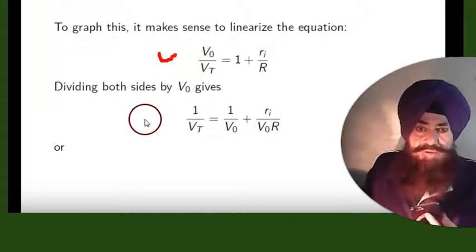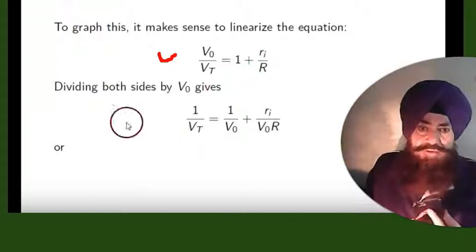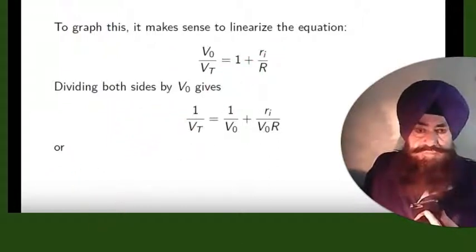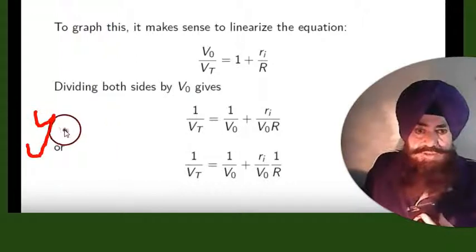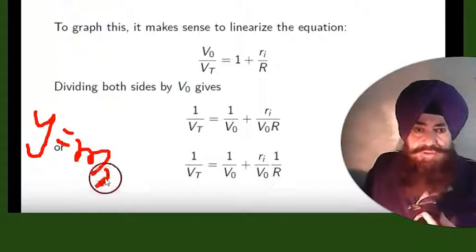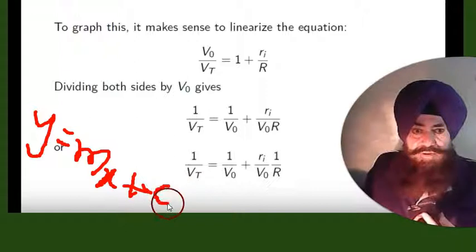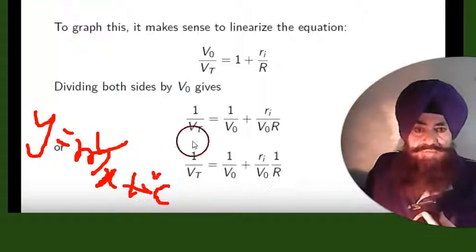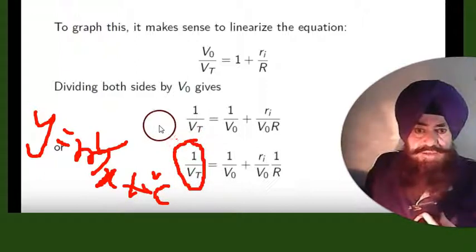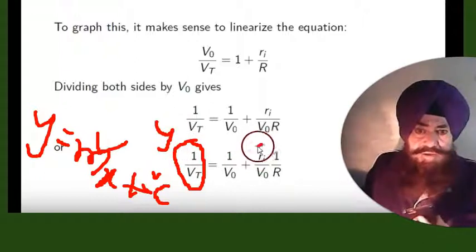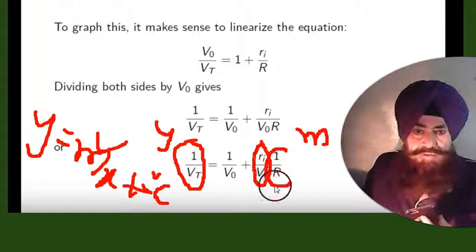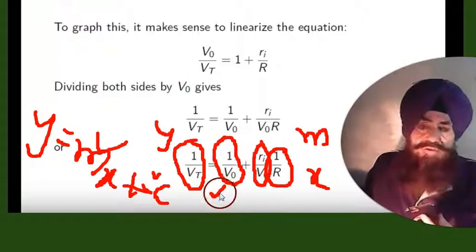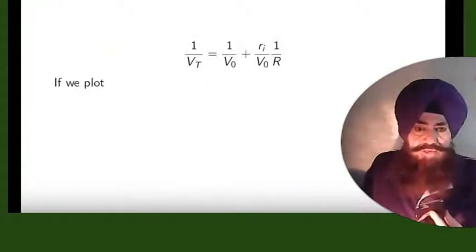Now, taking the VT equation and dividing each term by V₀ gives a new equation. Compare this with the straight line equation y = mx + c, where m is the slope and c is the intercept. Here, 1/VT is y, ri/V₀ is the slope m, 1/R is x, and 1/V₀ is the y-intercept. So this is a straight line equation, and if we plot it, it will be a straight line.